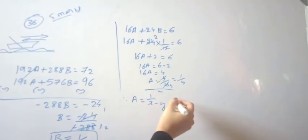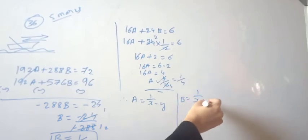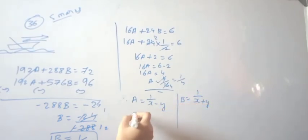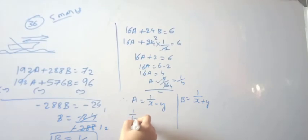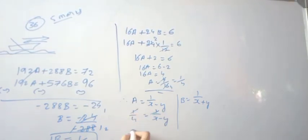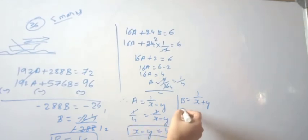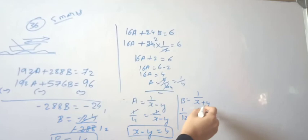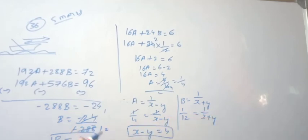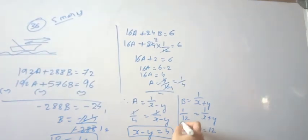Now converting back: since a equals 1/(x−y) and a equals 1/4, we get x minus y equals 4. Since b equals 1/(x+y) and b equals 1/12, we get x plus y equals 12.